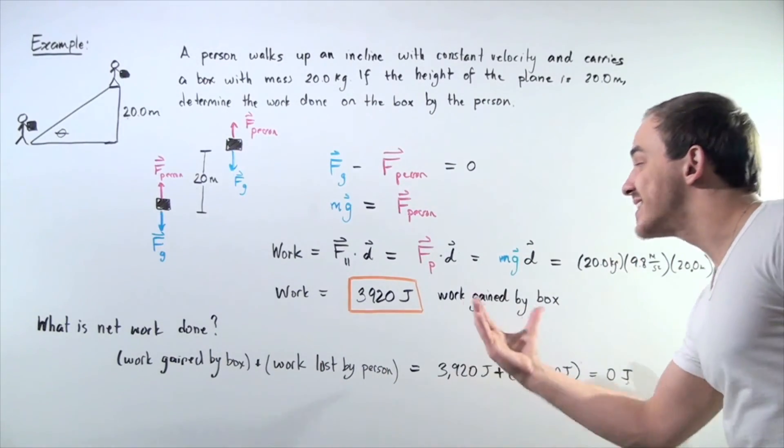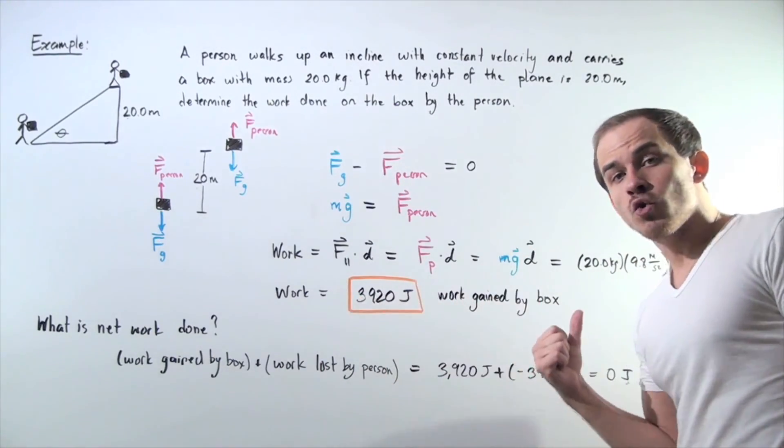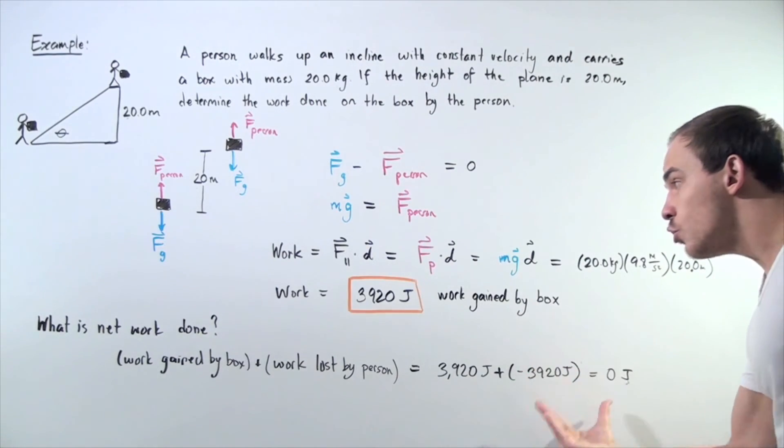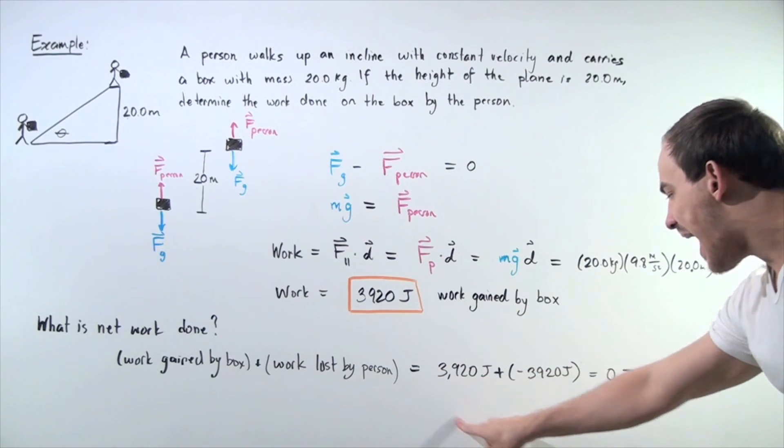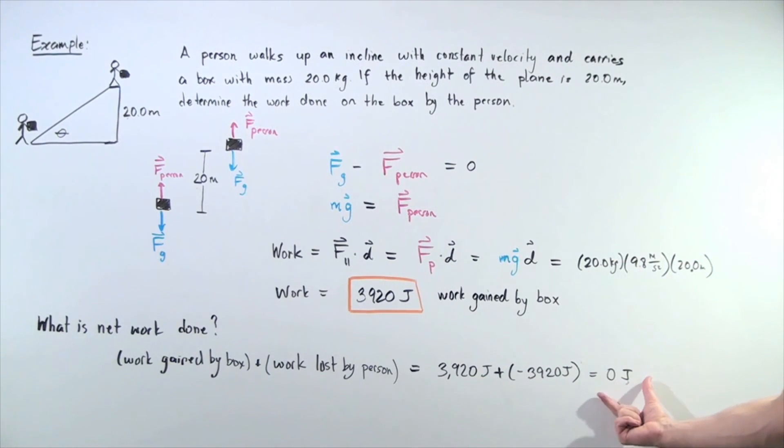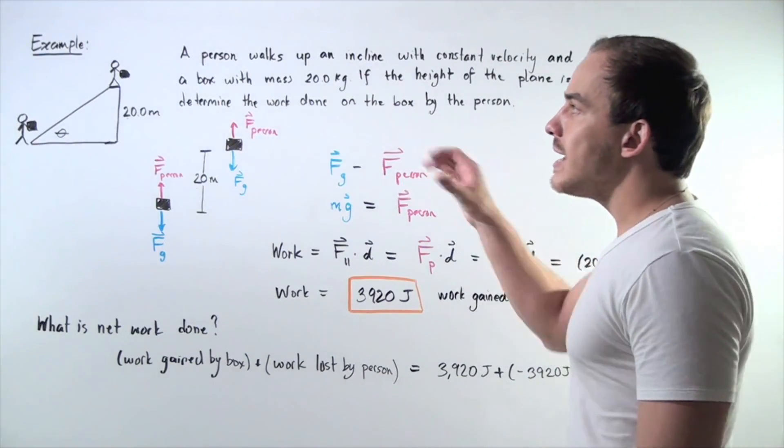The box gains this many joules and the person loses this many joules. That means we simply add up these two values and we get a net work of zero joules done in our problem.